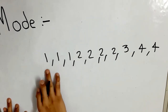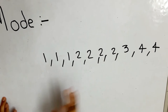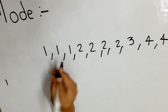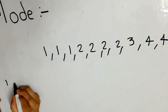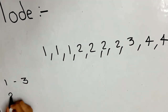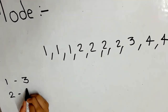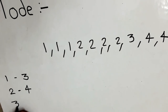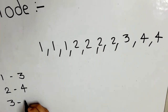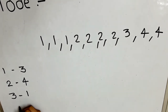To find the mode, first note how many times each number has occurred. 1 occurred 3 times, 2 has occurred 4 times, 3 has occurred only 1 time, and 4 has occurred 2 times.